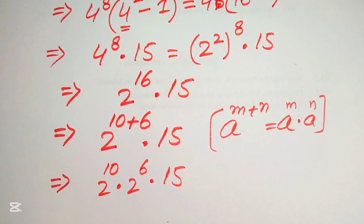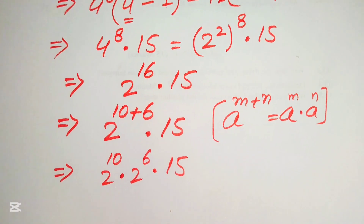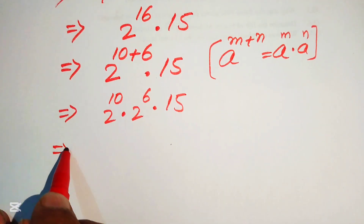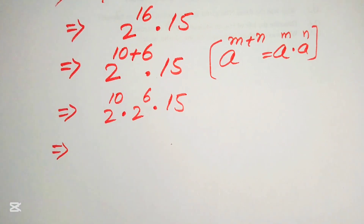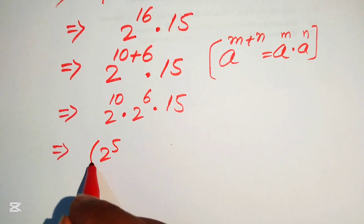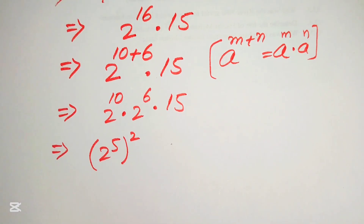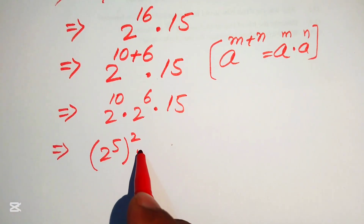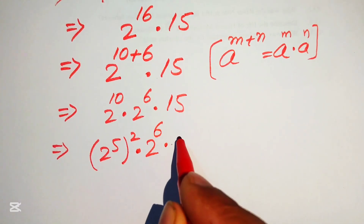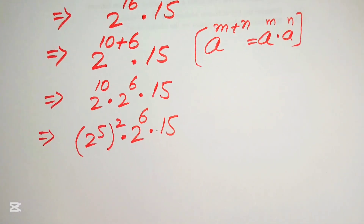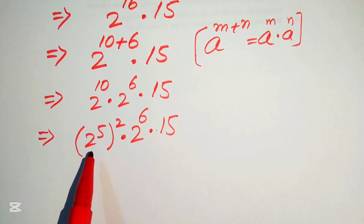Next, we find the values of 2 to the power of 10 and 2 to the power of 6. We rewrite 2 to the power of 10 as (2 to the power of 5) squared — because when we have exponent to an exponent, they are multiplied — and this is multiplied by 2 to the power of 6 and by 15.